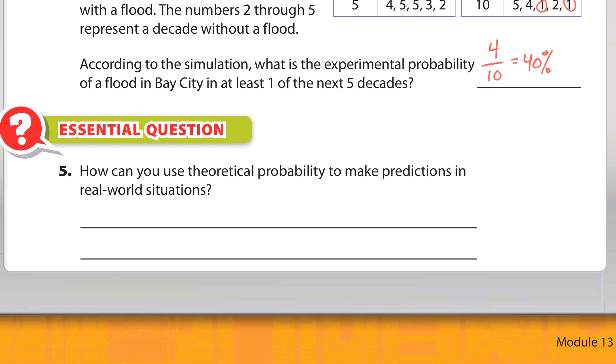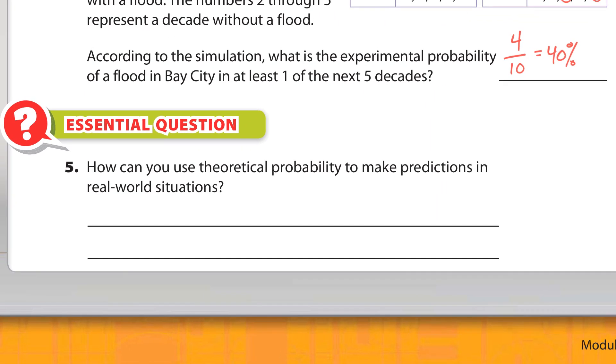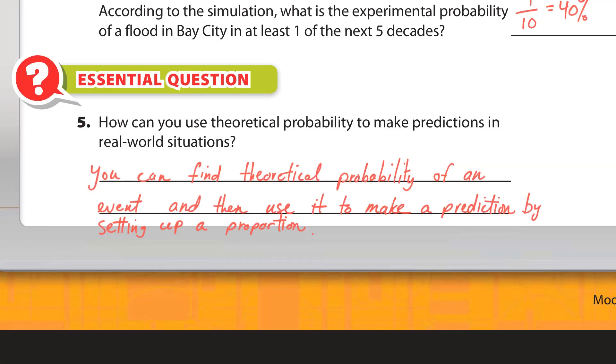And how can you use theoretical probability to make predictions in real world situations? This is my response to it. You can find theoretical probability of an event, and then you can use that probability to make a prediction by setting up a proportion. Pretty simple.